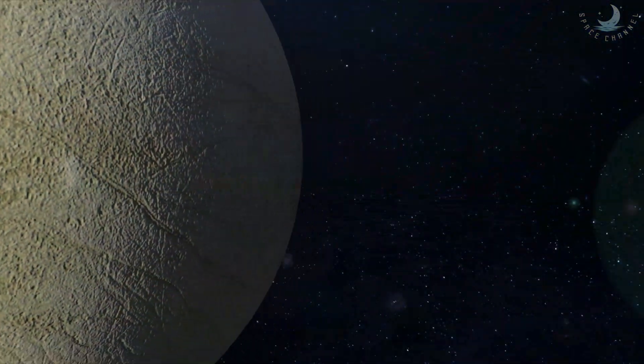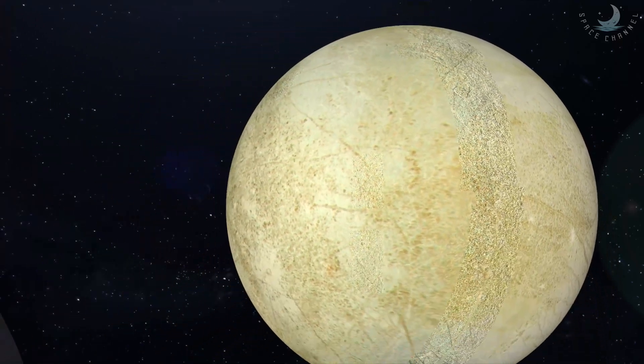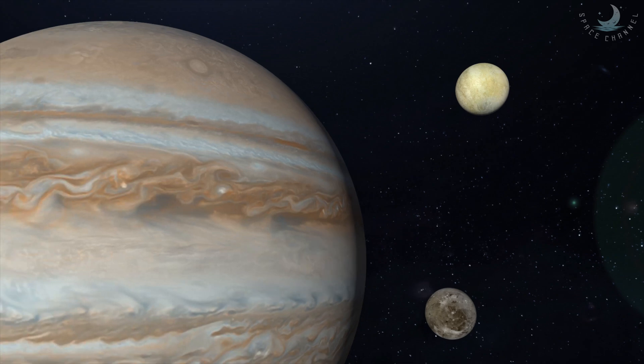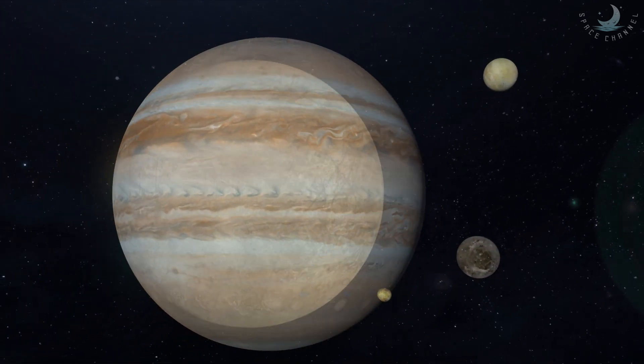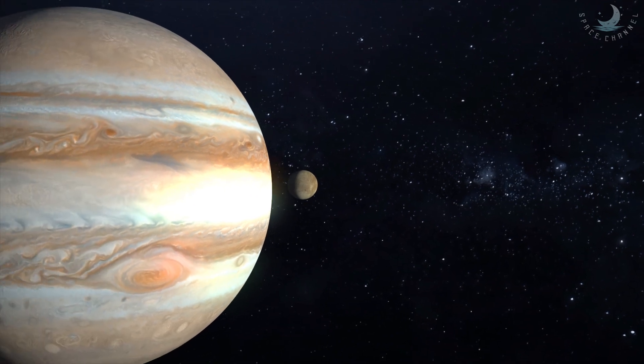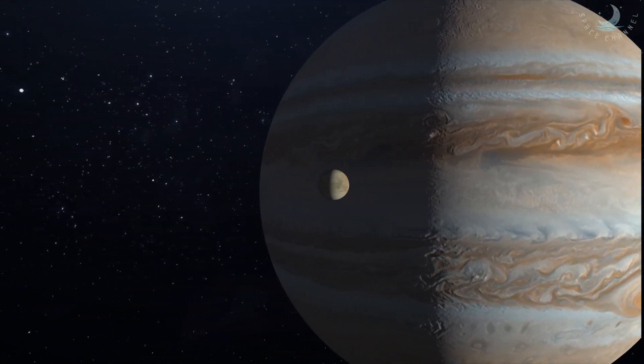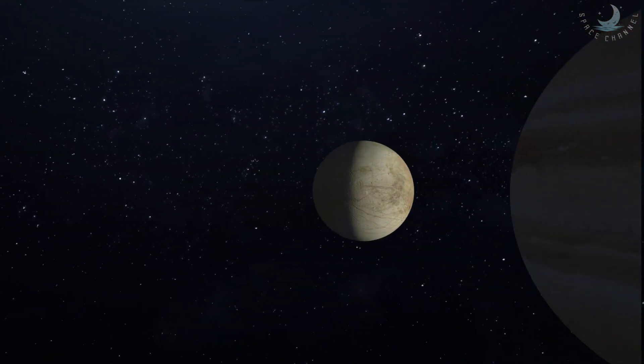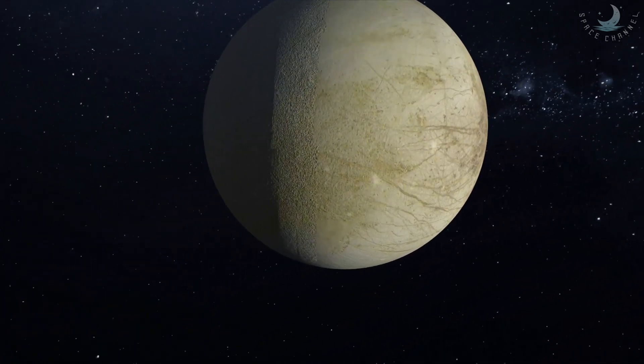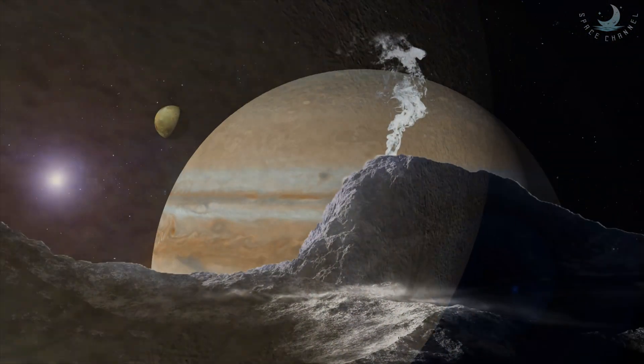This deep into the solar system, Europa's underground ocean would not feel the warmth of the sun. It would stay liquid because of Jupiter's gravitational tugging. Europa orbits Jupiter in just over three and a half days with an orbital radius of about 670,900 kilometers. Europa is tidally locked to Jupiter with one hemisphere constantly facing Jupiter.